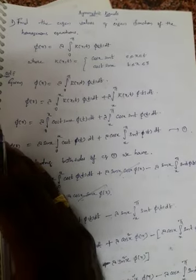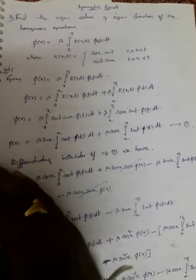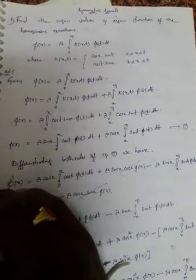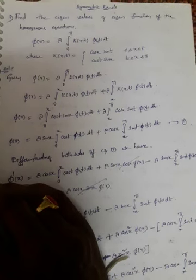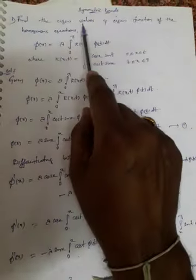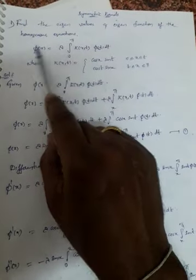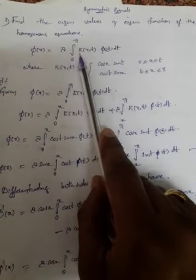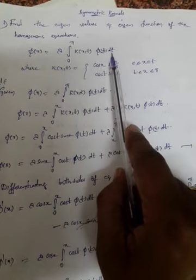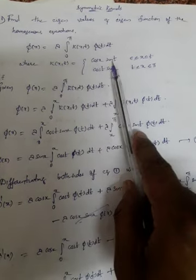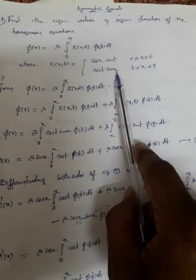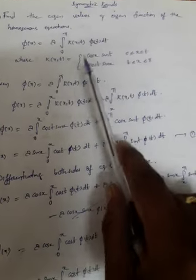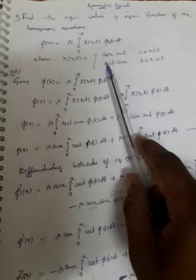So k(x,t) — in the place of x you may write t, and in the place of t you may write x. So k(x,t) is equal to k(t,x). Regarding that, one problem we are going to solve: find the eigenvalues and eigenfunctions of the homogeneous equation. This is a 12 marks question, and now we will try to find out the eigenvalues and eigenfunctions for this equation.